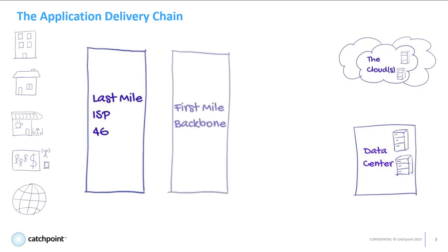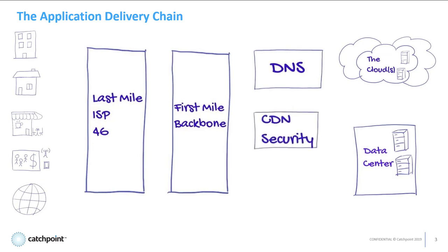Next up, users hit the backbone transit networks — basically the core of the internet — and again, there are many providers in this space with varying reliability and performance. After that, there are additional services like DNS, content delivery networks, and security providers and third-party services. All these components affect how your users experience your application, so having the ability to monitor all of these components and vendors is key to providing a good digital experience.